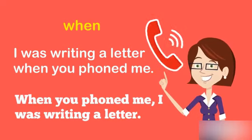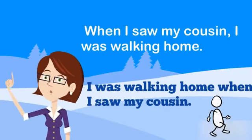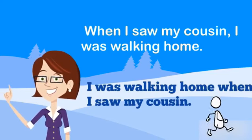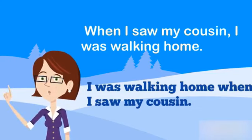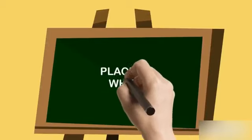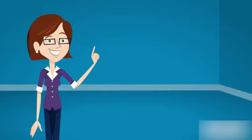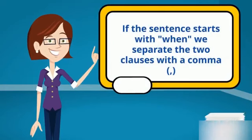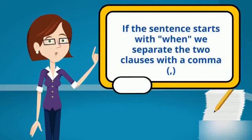As you see, after 'when' the past simple is used. Another example: When I saw my cousin, I was walking home — or: I was walking home when I saw my cousin. We know that 'when' is used with the past simple, but where to place it in the sentence? If the sentence starts with 'when', we separate the two clauses with a comma.